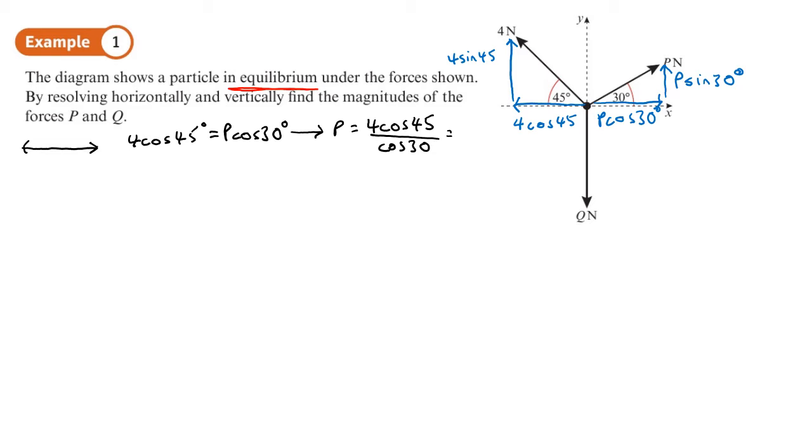Let's just work that out and see what we get. So 4 cos 45 divided by cos 30 in degrees. We get 4 root 6 over 3. Well, actually I'm going to write the exact value down because I'm probably going to need that in a minute.